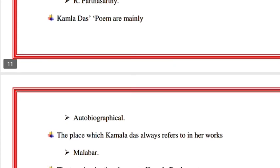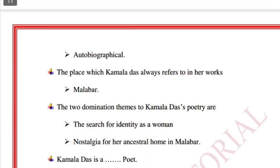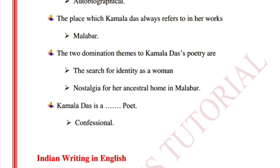Kamala Das's poems are mainly autobiographical. The place she always refers to in her works is Malabar. The two dominant themes of Kamala Das's poetry are: the search for identity as a woman, and nostalgia for her ancestral home in Malabar. Kamala Das is a confessional poet.